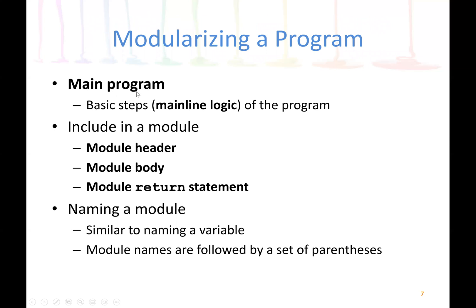We also need a main program, especially for standalone applications, because execution always takes place there. The main program contains the basic steps or main-line logic. A module includes a module header and a module body where the code, statements, or expressions reside. At the end, we may have a return statement — for example, a function that finds the sum of two numbers can return that sum. Naming a module is similar to naming a variable, following the identifier rules of the programming language, and module names are followed by a set of parentheses.